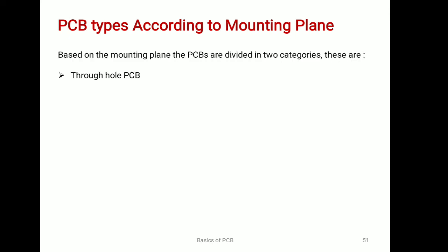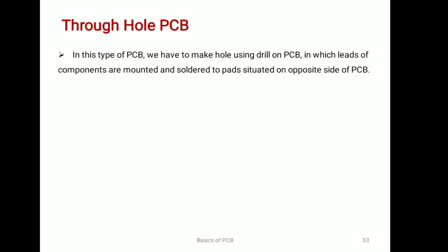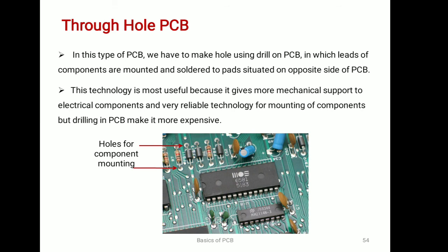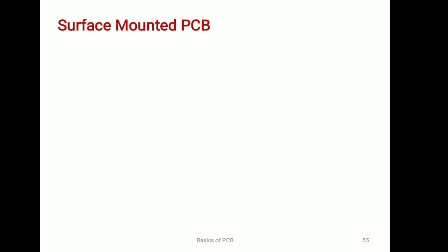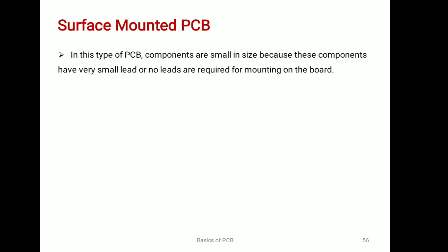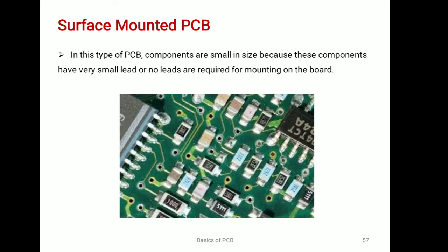PCB types according to mounting plan. Based on the mounting plan, PCBs are divided into two categories: through-hole PCBs and surface mount PCBs. In through-hole PCBs, component leads are mounted using holes on the PCB and soldered, with two pads situated on opposite sides of the PCB. This mounting technology is easy to implement for single layer but more difficult for double layer and multi layer. In surface mount PCBs, SMD components are mounted directly on the surface of the board, with no requirement to drill holes.